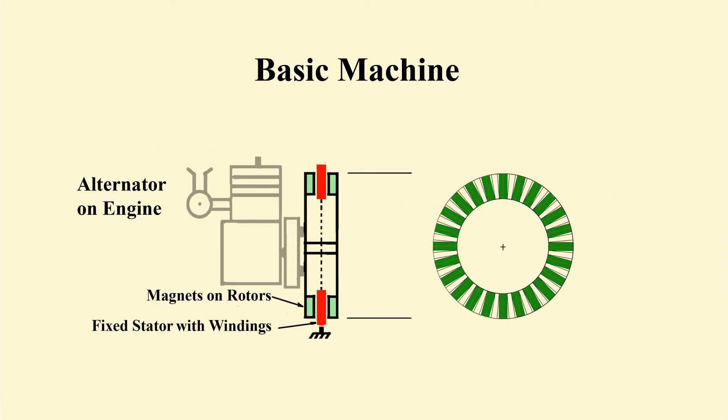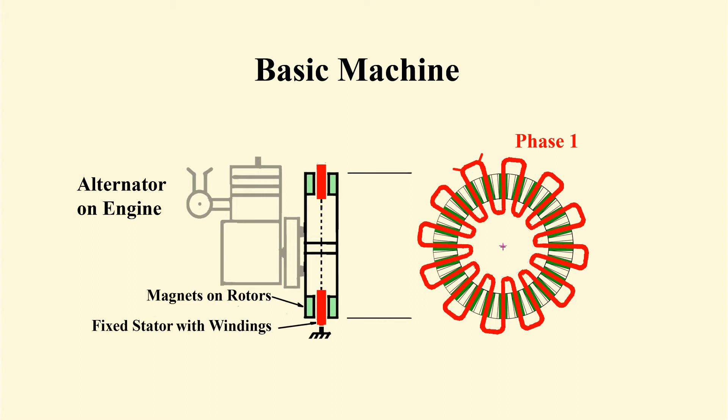This is the alternator as shown in the previous videos. Two mild steel rotors directly coupled to a small engine carry rectangular magnets on their inside faces. Phase 1 coil has legs lying along radii coinciding with magnet centers at peak output.